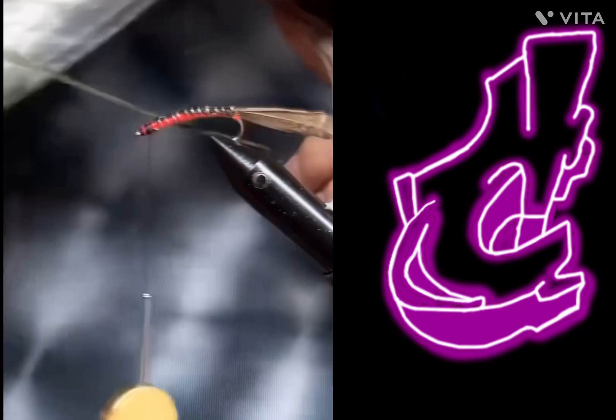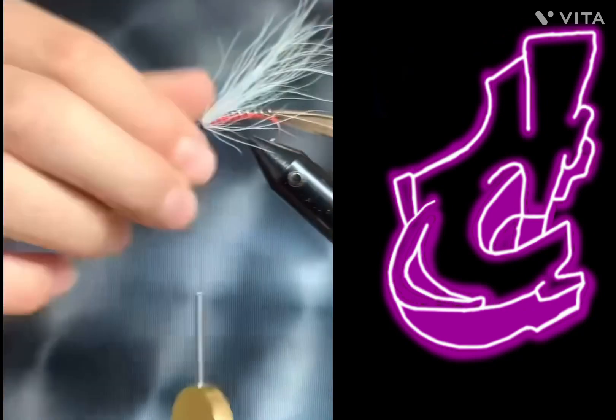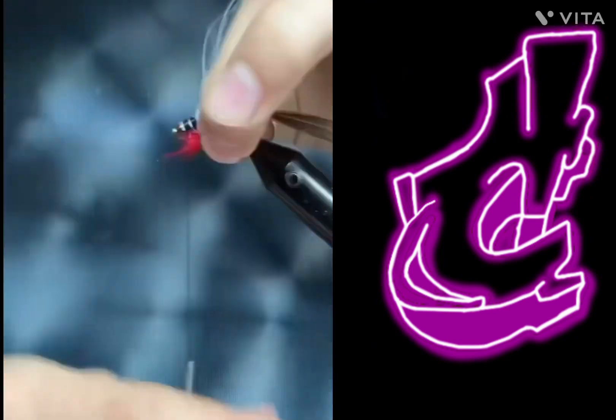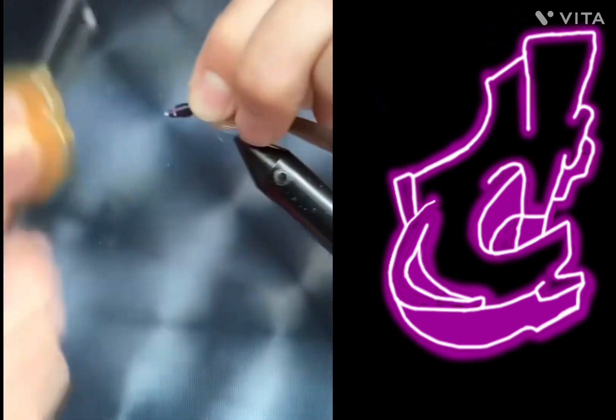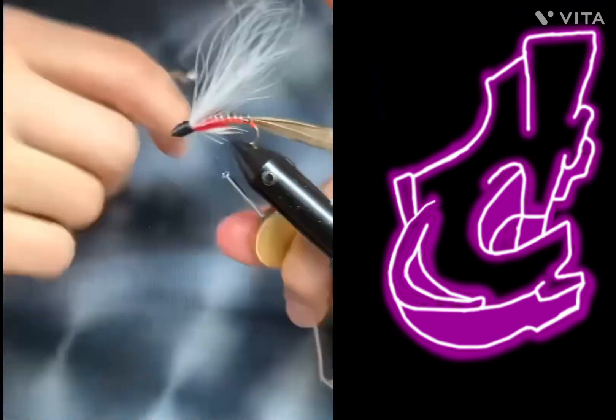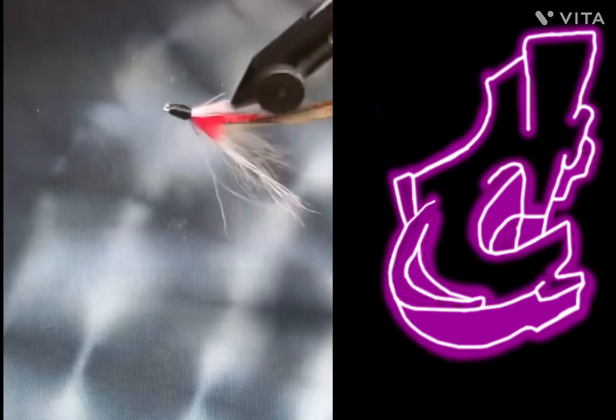Then take some white bucktail pieces, then some red marabou, and attach it to the bottom. Then go back to the bucktail and take the excess and put it on over the red. After that, whip finish. This is a baby brook trout.